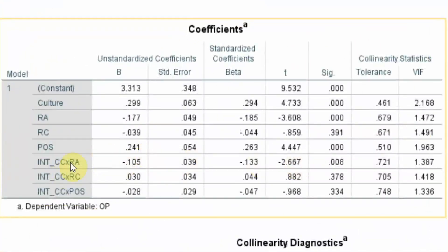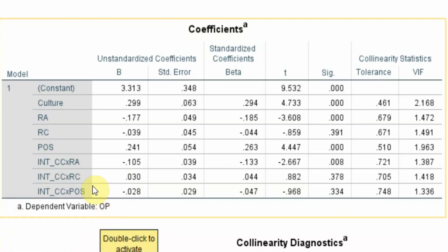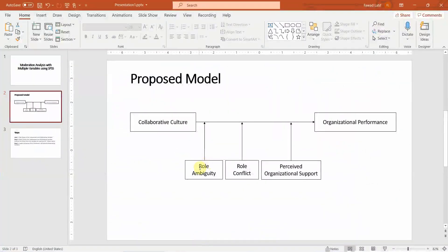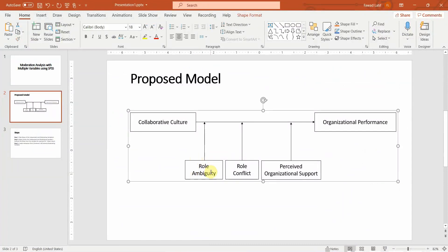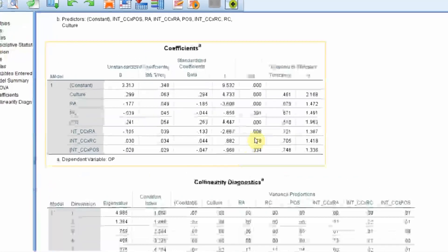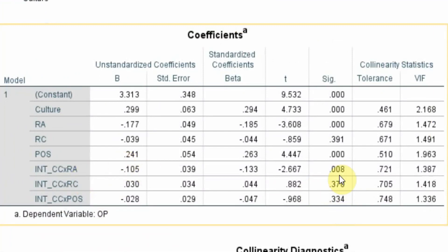Looking at significance, only role ambiguity moderates the relationship between collaborative culture and organizational performance because its p-value is less than 0.05 and its t-value is greater than 1.96. All other moderating variables — role conflict and perceived organizational support — are insignificant, with p-values greater than 0.05.